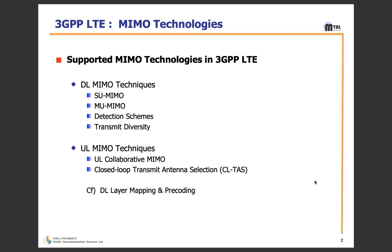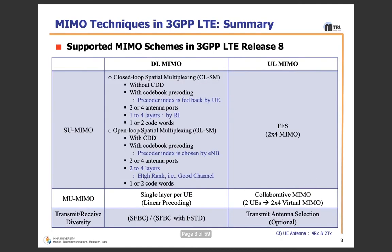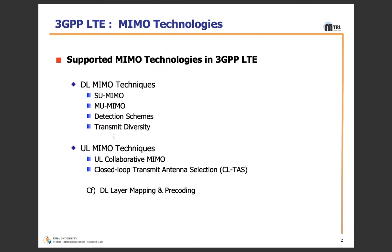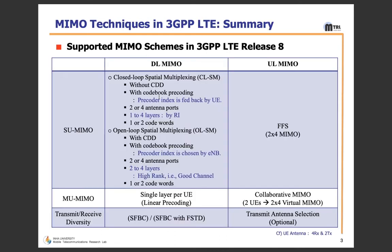There are some acronyms like SU-MIMO, MU-MIMO, and CDD that I'll explain in detail. This lecture is split into two videos. The first session covers DL MIMO techniques including SU-MIMO, MU-MIMO detection schemes, and transmit diversity. The second video will cover UL MIMO techniques including collaborative MIMO, closed-loop transmit antenna selection, and more — following the supported MIMO schemes in 3GPP LTE Release 8.